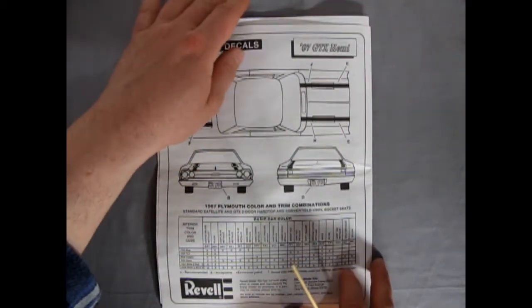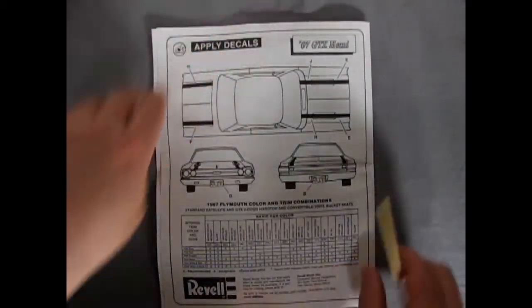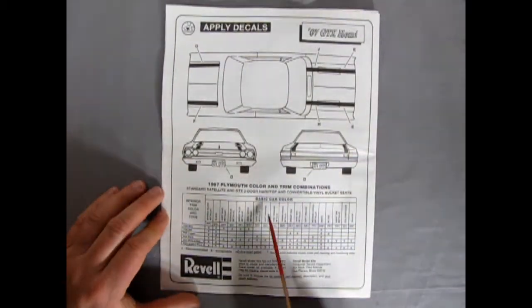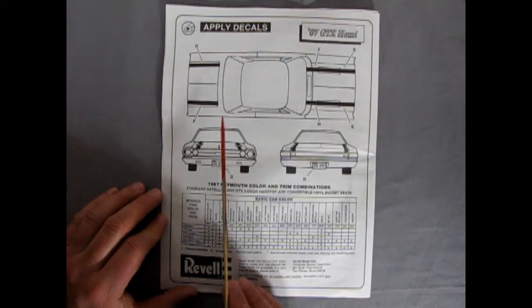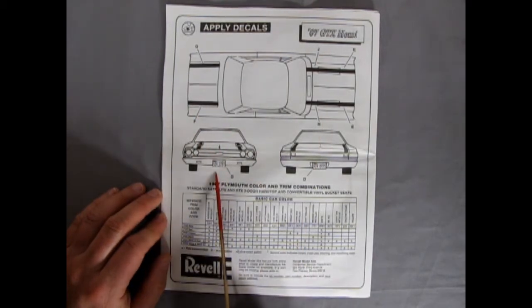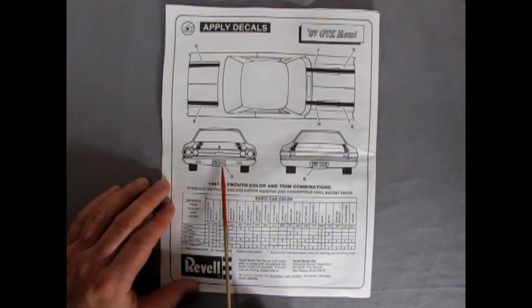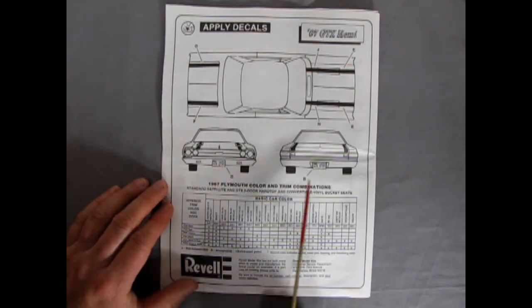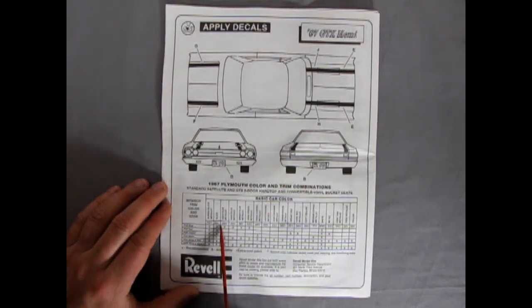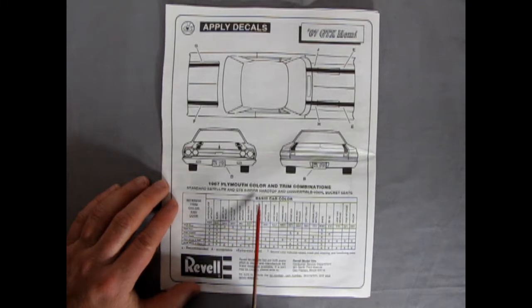Full size Plymouth GTX decal location chart. So you got your stripes going on there, and then your 426 GTX license plate again. Specific license plate, not a generic, which I prefer the generic because then you can put it in any town, any city. And then here it's got 67 Plymouth color and trim combinations. Standard satellite and GTX two door hard top and convertible vinyl bucket seats.